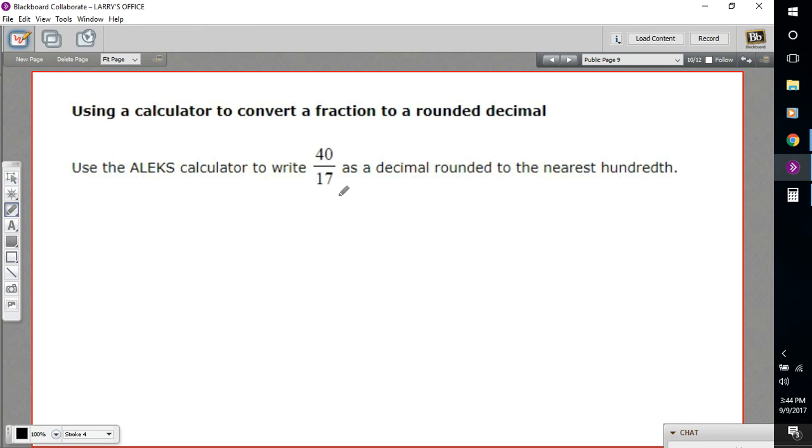In this problem, we're being asked to write 40 seventeenths as a decimal. So we'll pull up a calculator, we'll divide 40 by 17, and then we're being asked to round to the nearest hundredth.